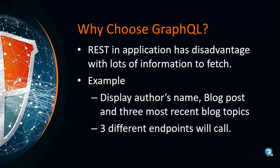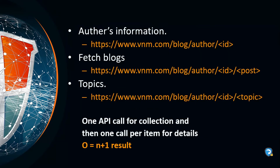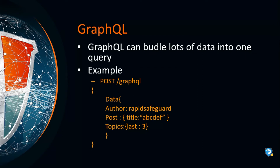Firstly, you fetch the author's information from an endpoint like www.vnm.com/blog/author with a specific ID. Secondly, another REST endpoint is needed to access the blog posts. Finally, you need another endpoint to get the blog topics. Clearly, one API call is needed for the collection and another API call per item for detail and display. In REST, we send multiple API requests to fetch data from the server.